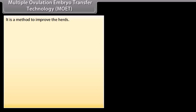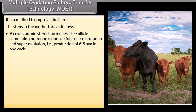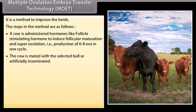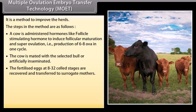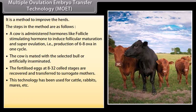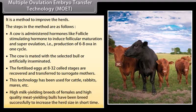Multiple Ovulation Embryo Transfer Technology (MOET) is a method to improve herds. A cow is administered hormones like follicle stimulating hormone to induce super ovulation, producing 6 to 8 ova in one cycle. The cow is mated with a selected bull or artificially inseminated. The fertilized eggs at 8 to 32 celled stages are recovered and transferred to surrogate mothers. This technology has been used for cattle, rabbits, mares, etc., to breed high milk-yielding females and high quality meat-yielding bulls to increase herd size in the short term.